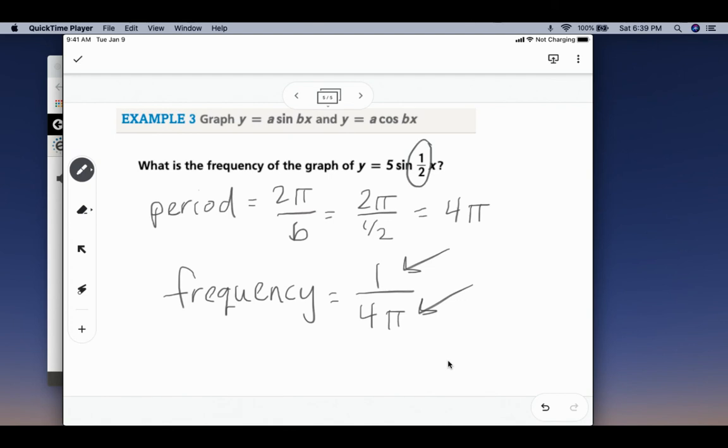So this graph would be more spread out. You would have a horizontal stretch instead of a horizontal shrink. So that is the basics of our sine and cosine graphs. Let me know if you have any questions.